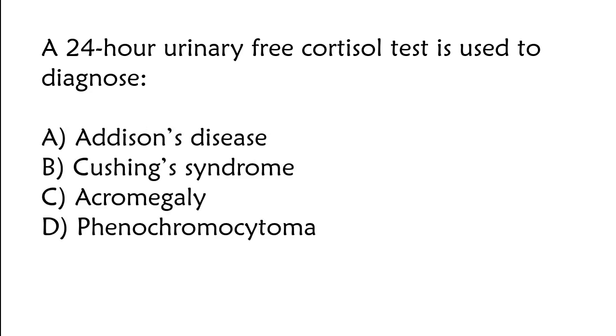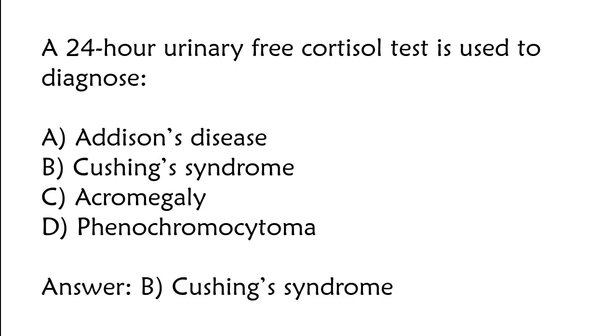A 24-hour urinary free cortisol test is used to diagnose: Addison's disease, Cushing syndrome, acromegaly, pheochromocytoma. The correct answer is Option B: Cushing syndrome.